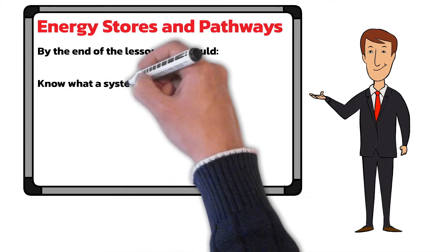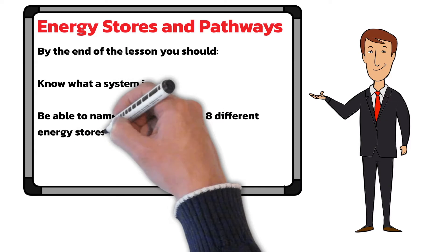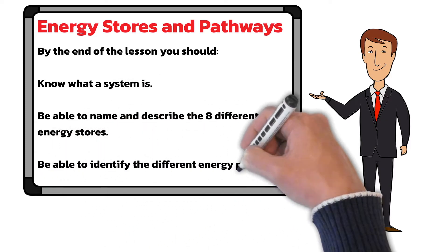By the end of the lesson you should be able to state what a system is, and be able to name and describe the 8 different energy stores and 4 energy pathways.